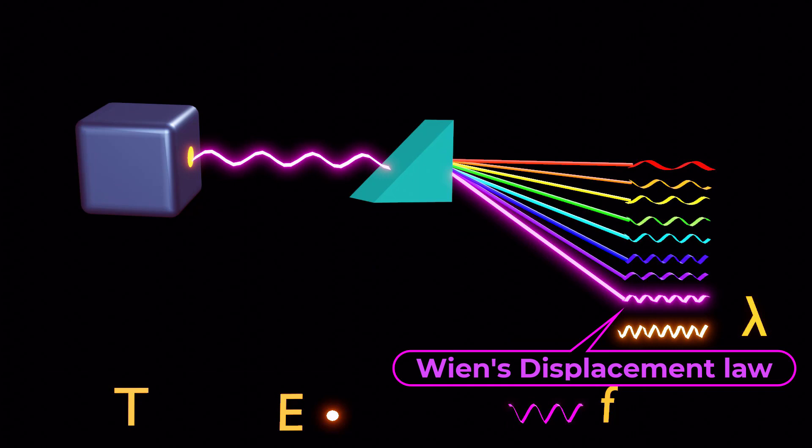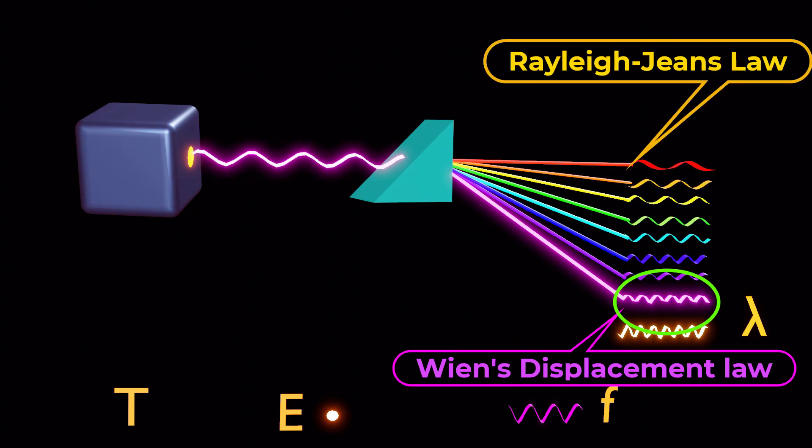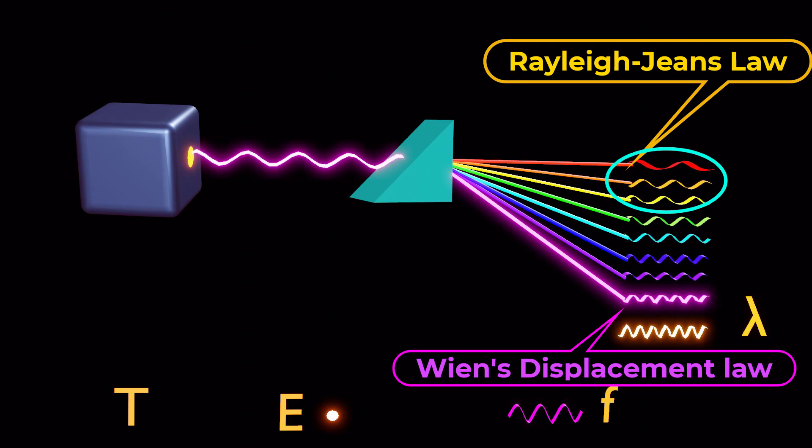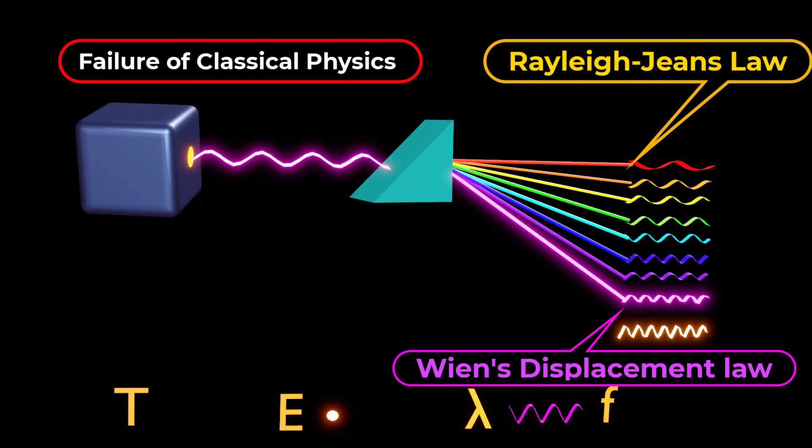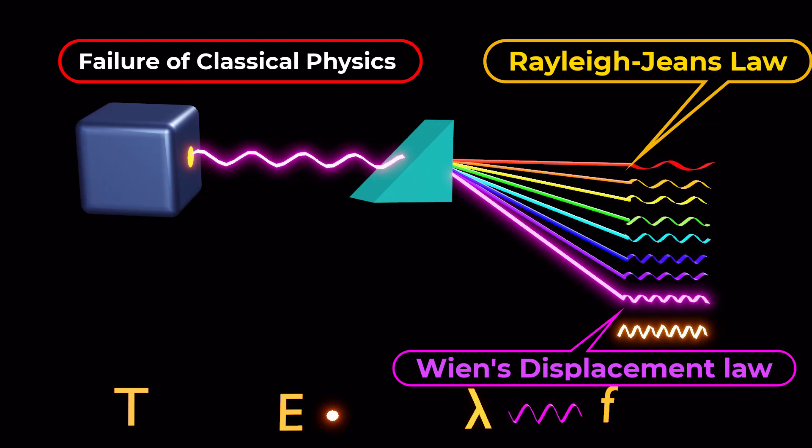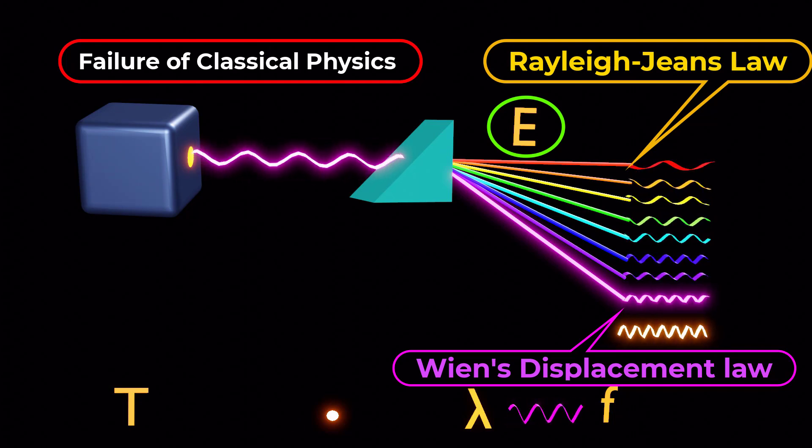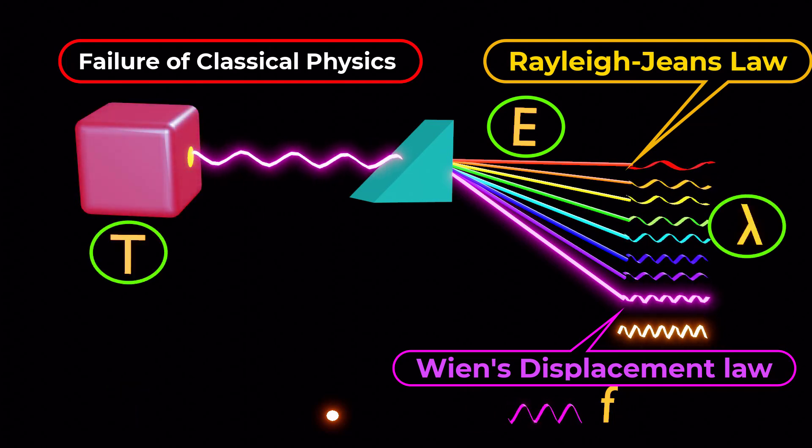Wien's displacement law worked well for shorter wavelengths, while the Rayleigh-Jeans law was effective at longer wavelengths but failed at shorter wavelengths. This failure revealed classical physics' inability to accurately represent a relationship between energy emission at different wavelengths and the temperature of a black body.